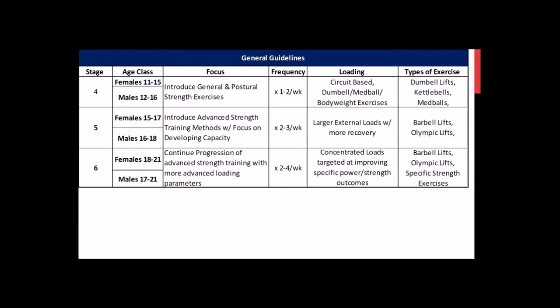Based on the LTAD framework, you want to start introducing strength training at Stage 4 — females age 11 to 15, males age 12 to 16. The focus should be on general and postural strength: the stability and movement tiers of the pyramid. Athletes should easily negotiate bodyweight exercises in a coordinated manner and develop competency with dumbbell and medicine ball exercises, not focused on adding load but on exposure to a variety of movement patterns, typically done in circuit style, one to two times per week.